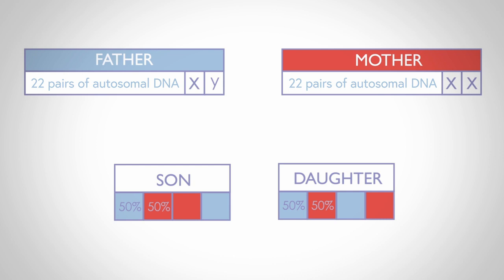The sex chromosomes work differently. These are named X and Y, with men carrying one X and one Y chromosome and women carrying two X chromosomes. Men inherit the X from their mother and the Y from their father, as you can see in the case of the son on the left hand side of the screen. Women inherit the X from their mother, along with a second X chromosome from their father, and this is shown for the daughter on the right hand side of the screen.